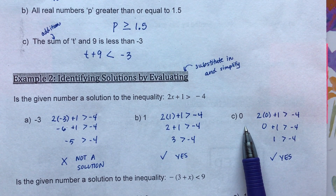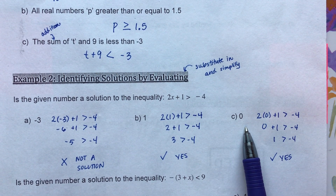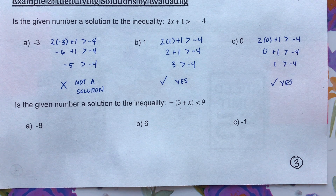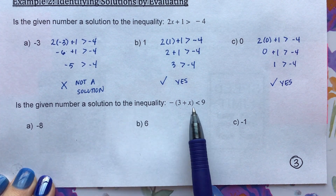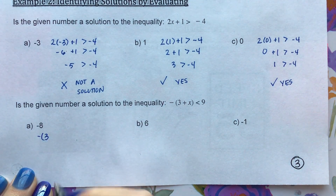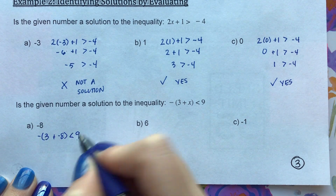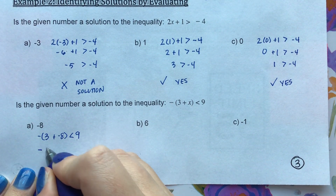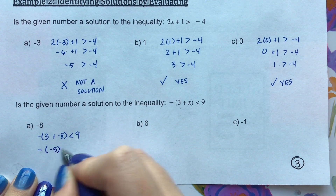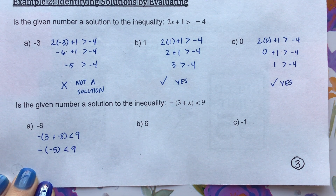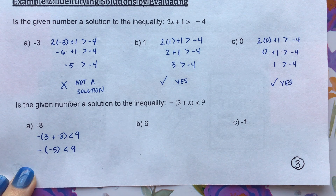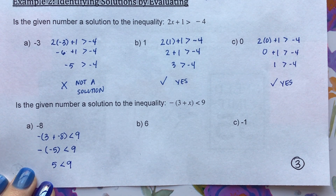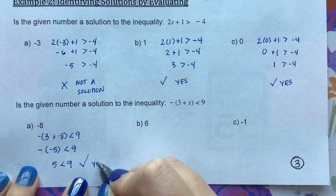Notice that with an inequality, you have many solutions — a solution set. Here negative 3 is not a solution, but 1 and 0 are. Let's do one more where we substitute in a value. Here I have negative 8 to substitute in: negative of (3 plus negative 8) is less than 9. Inside the parentheses, 3 plus negative 8 is negative 5. A negative of a negative is a positive, so we get positive 5 is less than 9 — and yes, that is true.